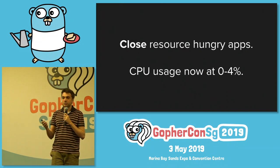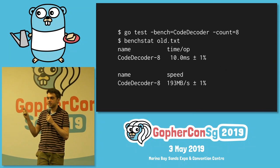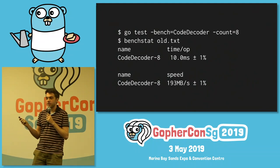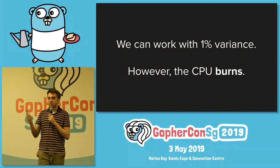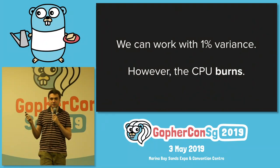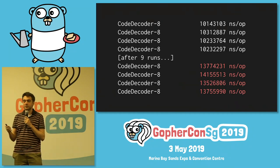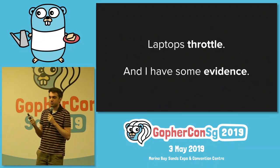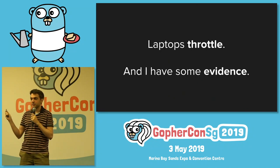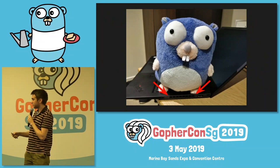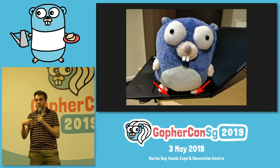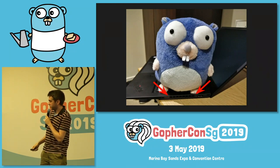If you rerun this benchmark eight times, you should see a variance of about one percent, and we can work with one percent. But the problem now is that the CPU burns. If we run the benchmark 20 times, after about nine runs on my laptop, it gets much slower. Why is that? The answer is that laptops throttle. That's my laptop — you can see the tiny air vents at the bottom, about two gopher feet wide. That's where the heat escapes through. This laptop has four real cores running at 3.4 GHz on turbo speeds.